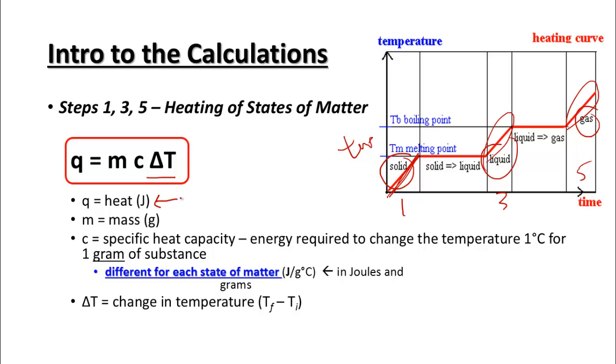You solve for this by plugging in the mass in grams, using the specific heat capacity, which is letter C, the amount of energy required to change the temperature of 1 degree Celsius for 1 gram of that substance. And also use delta T, which is the change in temperature. You need to figure out your final spot and your initial spot, then subtract the difference for those two things.